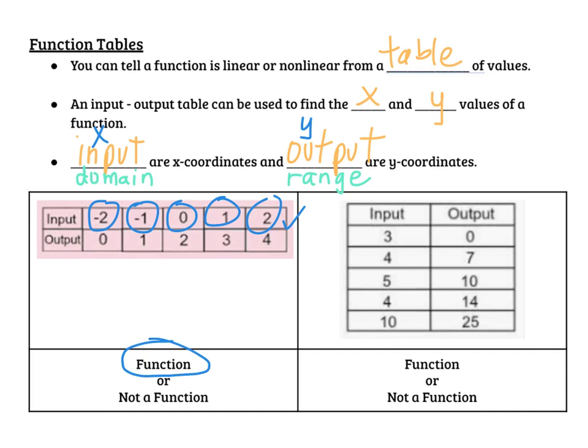And let's look at our inputs in our second table. Do you see right here that that repeats? It says 4 is 7 and 4 is 14. So this table is not a function. I want to take this a step further. You don't have this on your paper, but I want to show you what it looks like on a graph. And I want to do the vertical line test, and I want to see if it's linear or nonlinear. So stick with me.